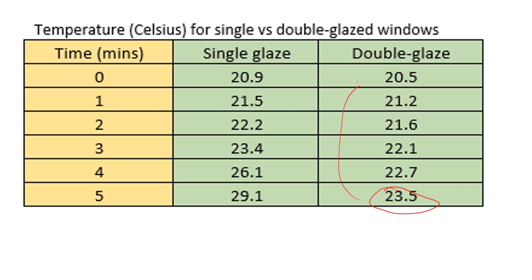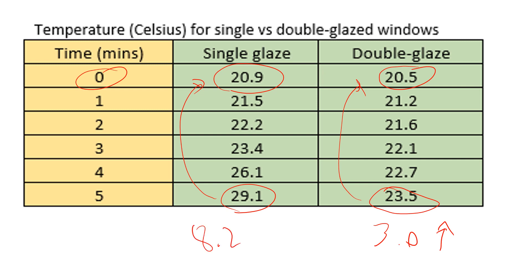We take 23.5 and subtract our starting temperature after zero minutes of 20.5 degrees, we get a three degree increase. For the single glaze, our ending temp minus our starting temp: 29.1 minus 20.9 — that's an 8.2 degree increase. We don't need to be mathematical gurus to identify that that is a huge variation after only five minutes of testing — well over double the increase when comparing single glaze versus double glaze, highlighting that the double glaze is far more effective in insulating heat transfer.